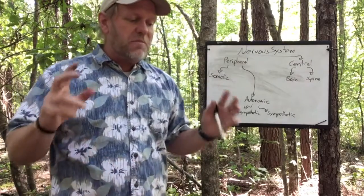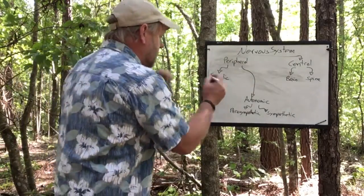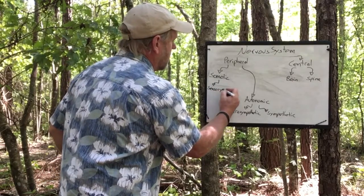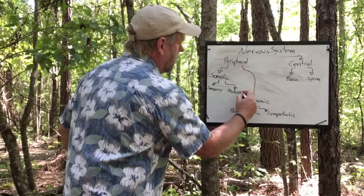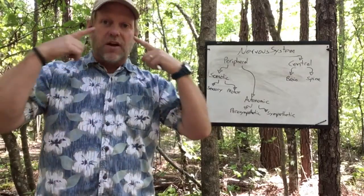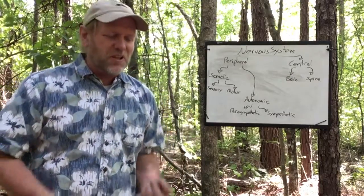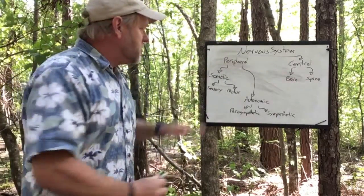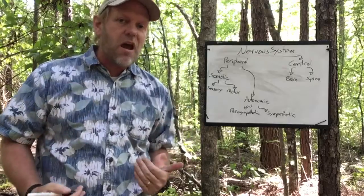The somatic system is different — these are the nerves we have a little more control over. The somatic comes in two types: sensory nerves and motor nerves. Sensory nerves, exactly as they sound, handle our five senses — sight, hearing, smell, taste, and touch. All of that information flies up into our brain constantly, trying to tell our brain what is going on around us.